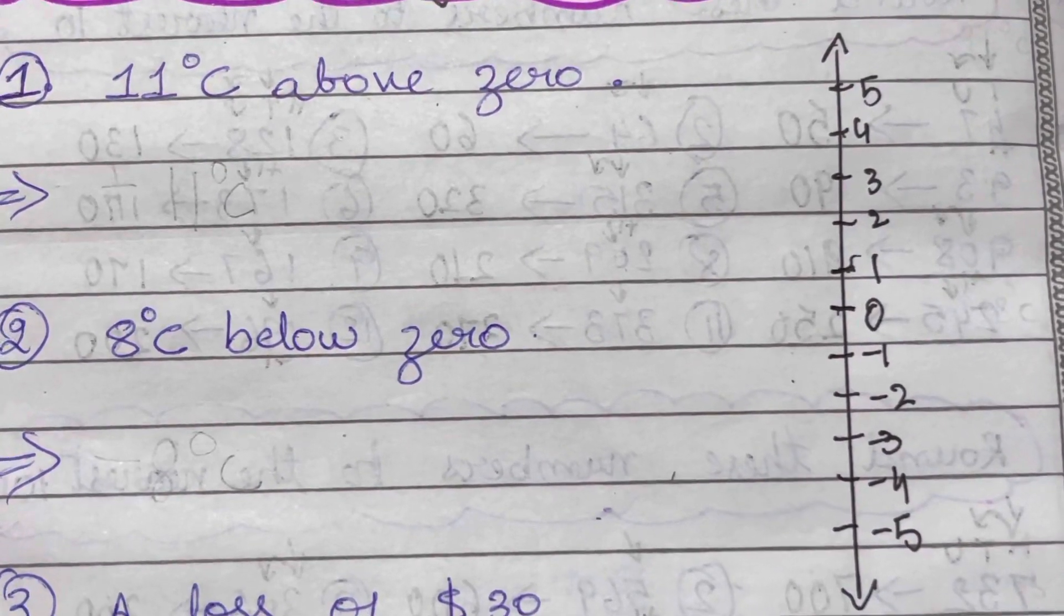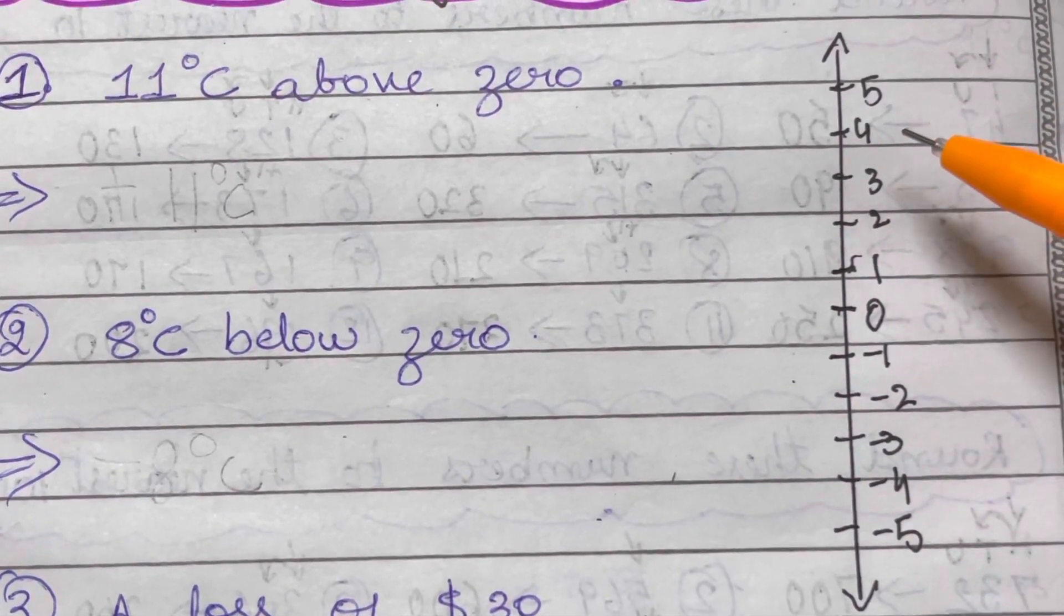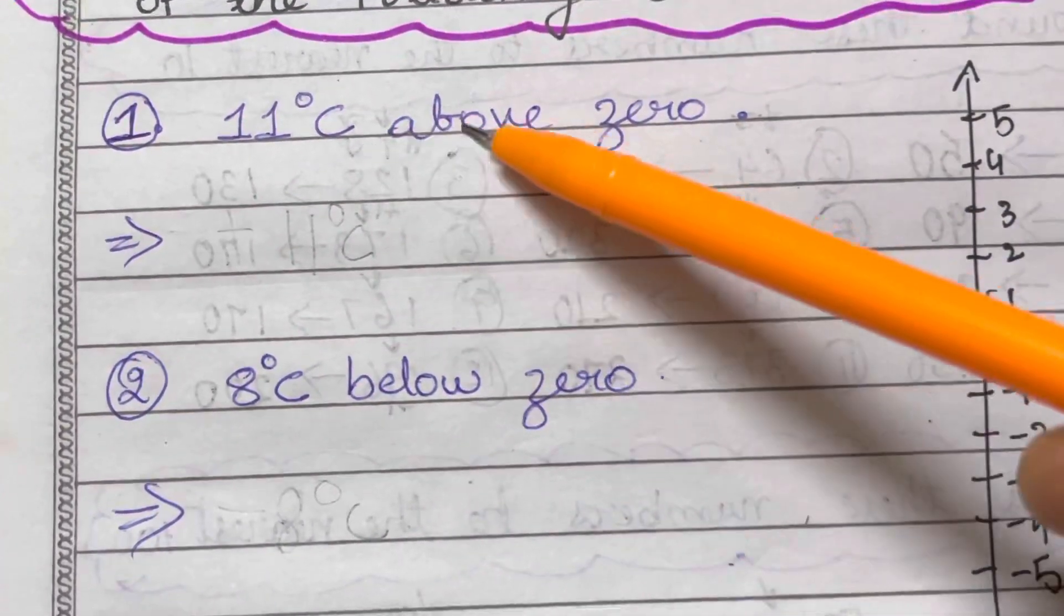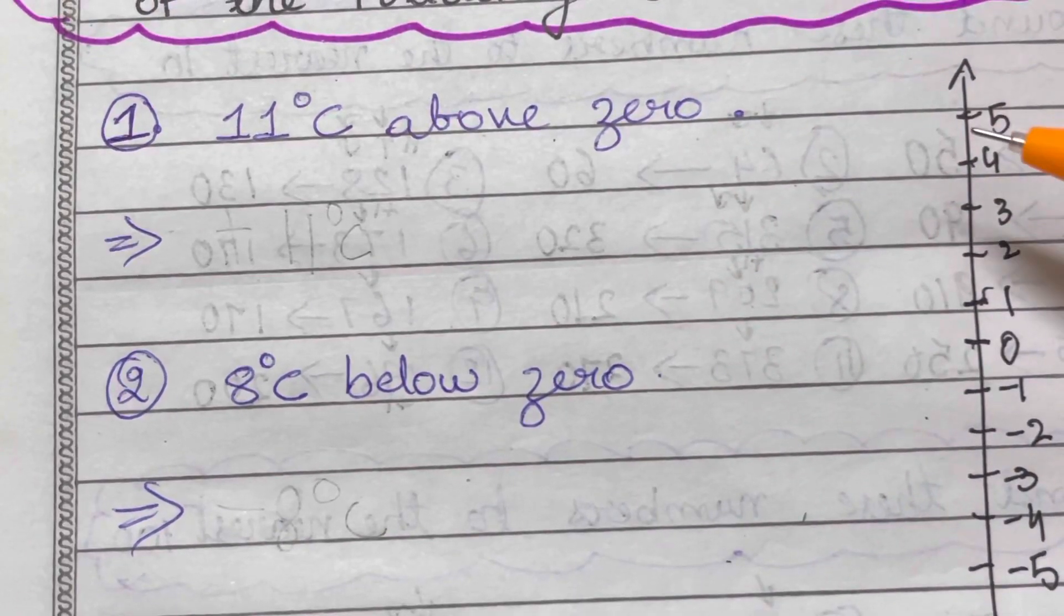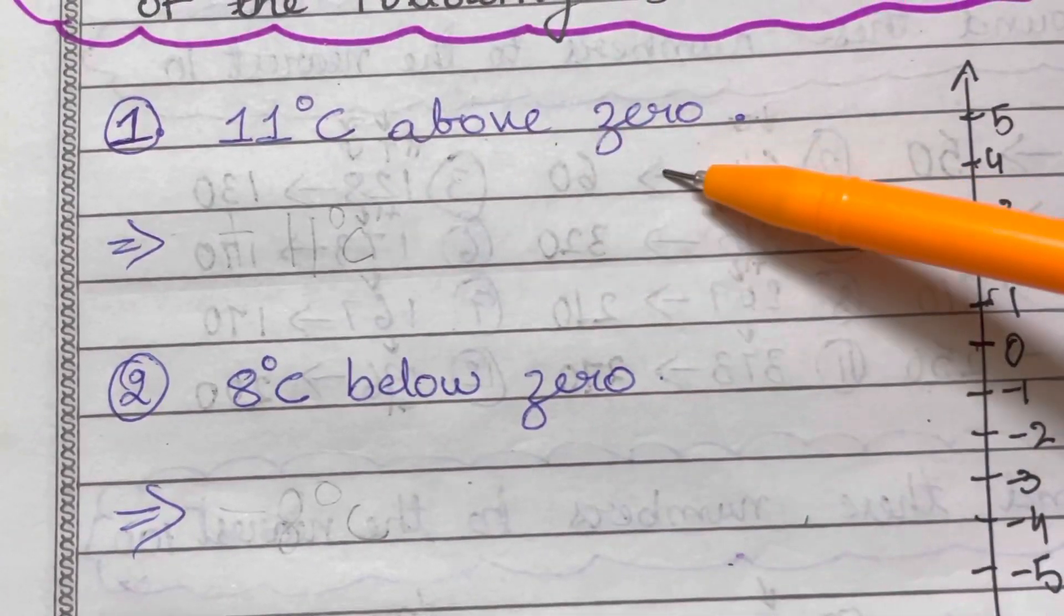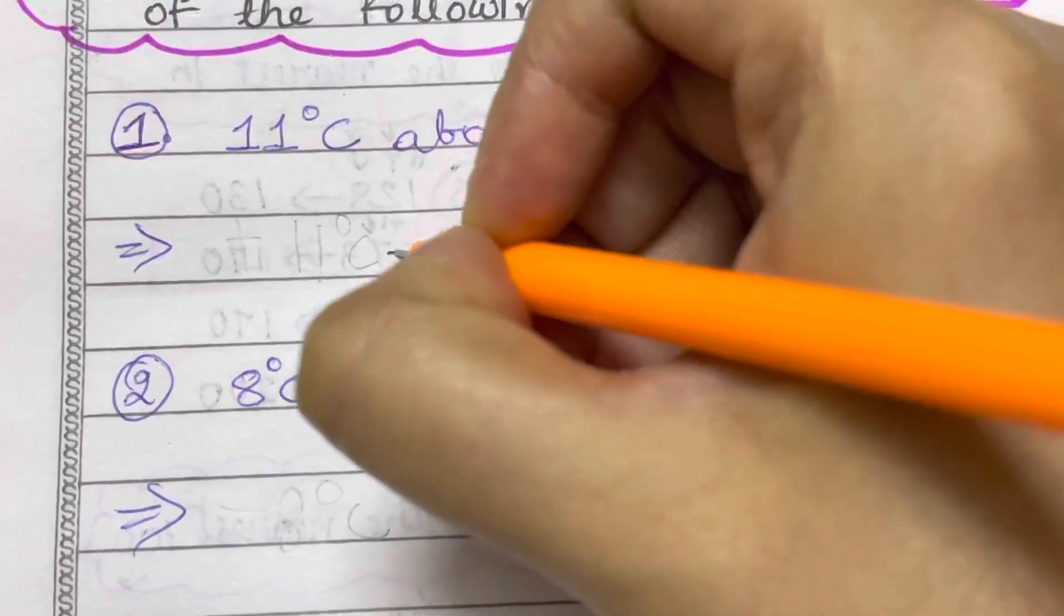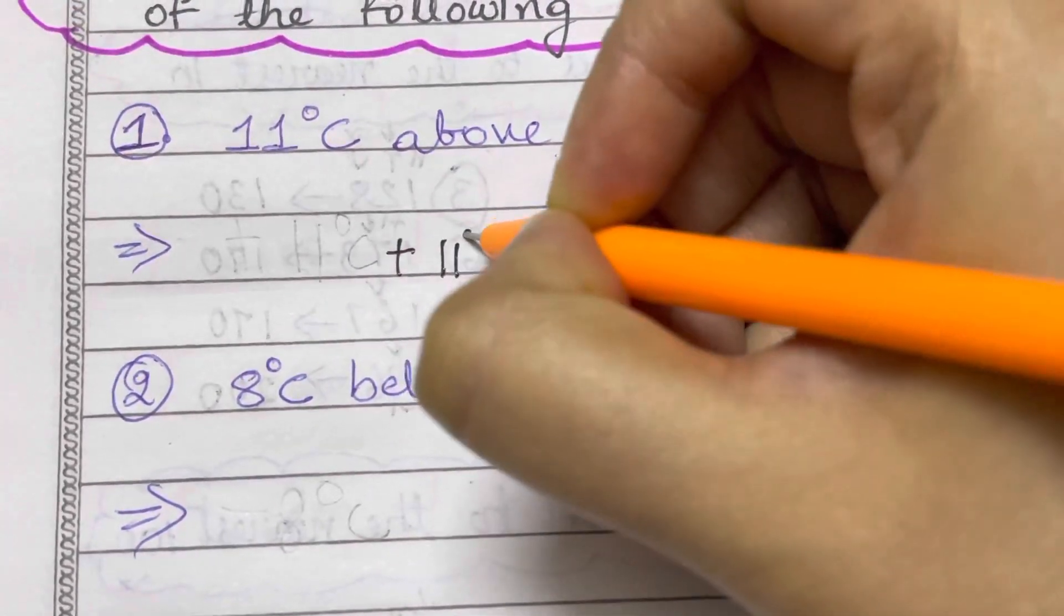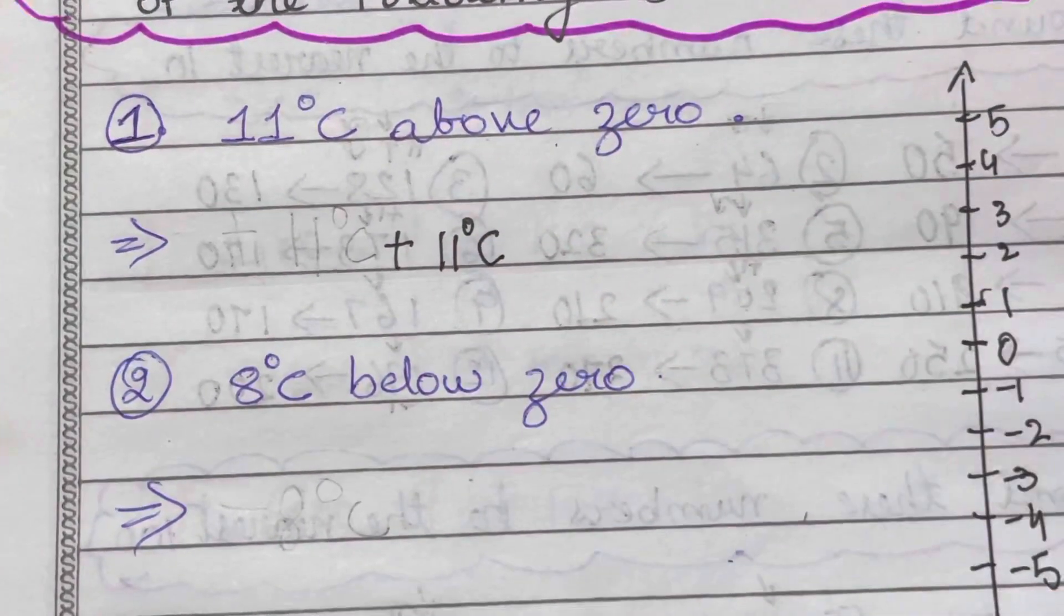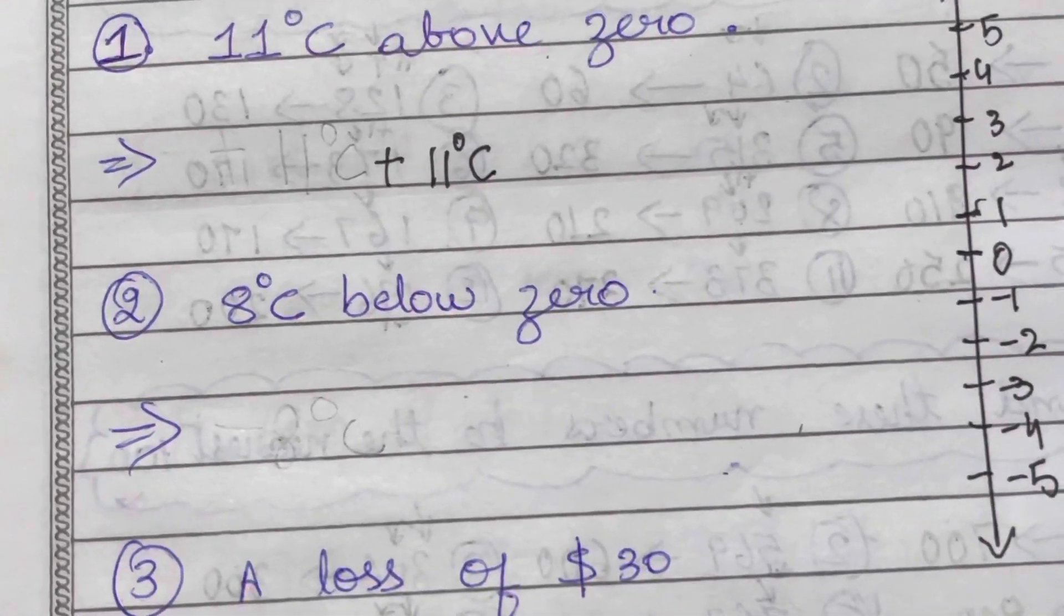11 degrees centigrade above zero. So how are we going to represent 11 degrees centigrade above zero? Above zero, the numbers are positive, so we are just going to write plus 11 degrees centigrade. That's what we have to mention - the sign, plus 11 degrees centigrade.